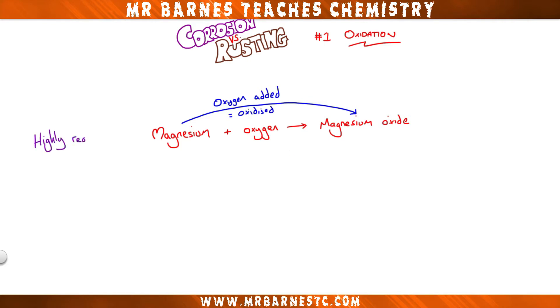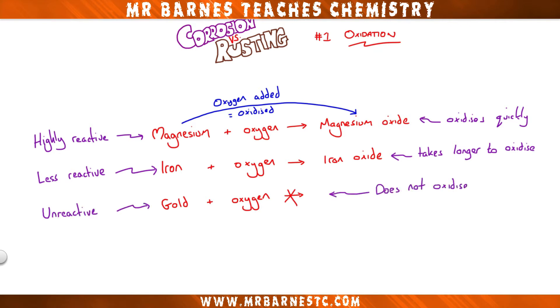Now, magnesium is a highly reactive metal, so it will oxidise really quickly, but if we looked at iron, which reacts with oxygen to form iron oxide, it's a less reactive metal, so it will still oxidise, but it will take longer. If we then look at gold, it doesn't react with oxygen. It's an unreactive metal, so it does not oxidise at all.